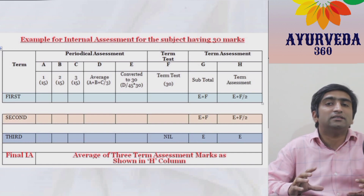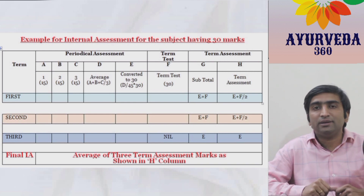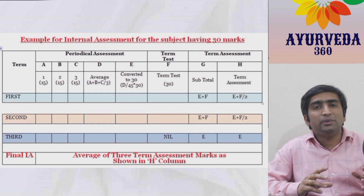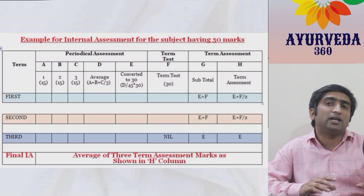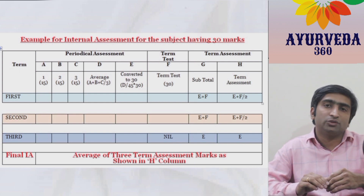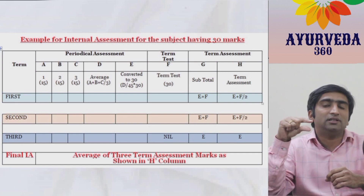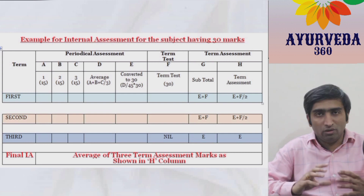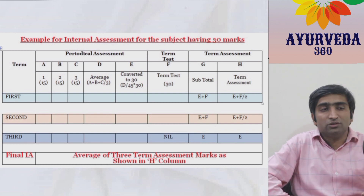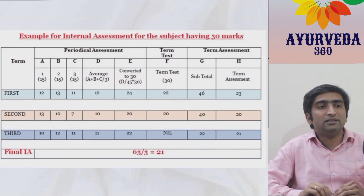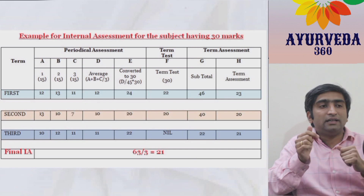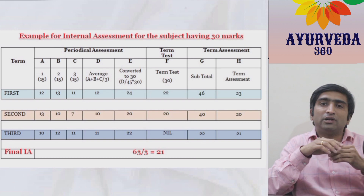Imagine the internal assessment for a subject is 30 marks out of a total 400 marks for that paper. All three periodic assessments will be calculated for 15 marks and then averaged and converted into 30. The term test at the end of six months will also be calculated out of 30, and the average of these two taken. For example, a student gets 11, 13, and 11 in the three periodic assessments out of 15 — the average is 12, which converts to 24 out of 30.